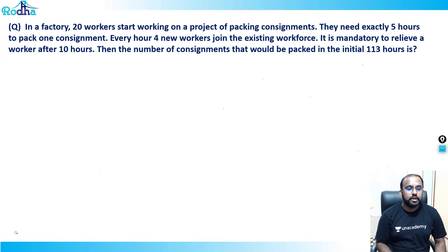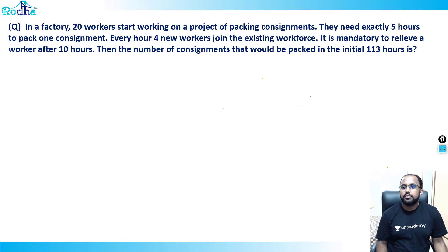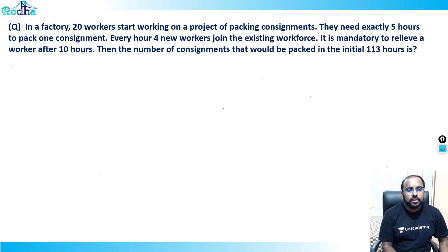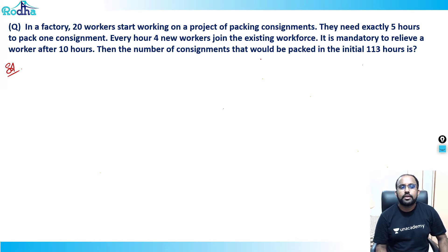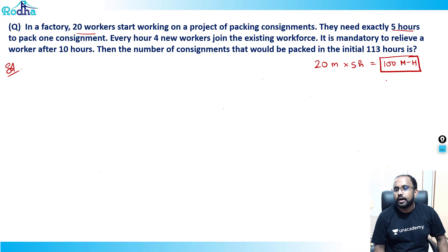In a factory, 20 workers start working on a project of packing consignments. They need exactly five hours to pack one consignment. Every hour, four new workers join the existing workforce. It is mandatory to relieve a worker after 10 hours. Find the number of consignments packed in the initial 113 hours. First, let's combine man and hours: 20 workers × 5 hours = 100 man-hours are needed to pack one consignment.